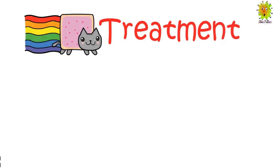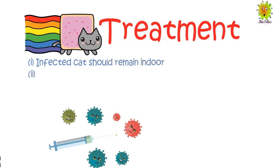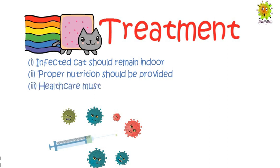Now we see how FIV can be treated. FIV-infected cats can live a happy life for a long period of time, but the virus affects the immune system, making the cat more susceptible to secondary infections. Supportive care should be provided, including keeping the infected cat indoors, providing proper nutrition, and ensuring regular healthcare such as vaccination and worm control.